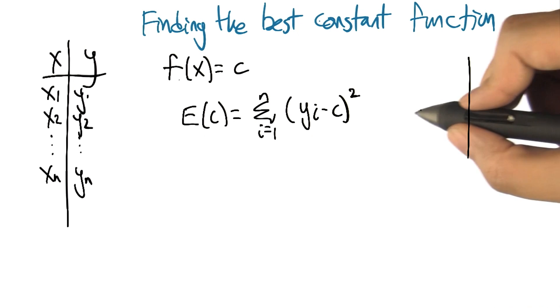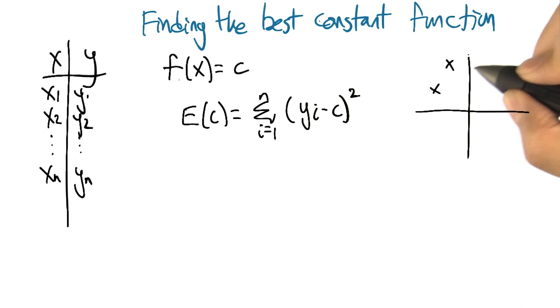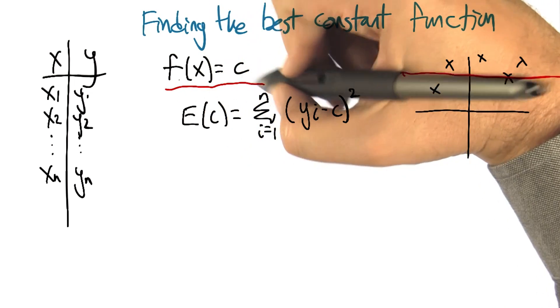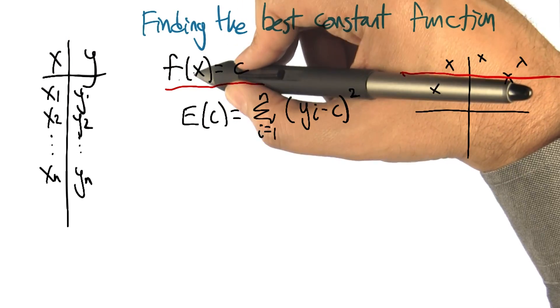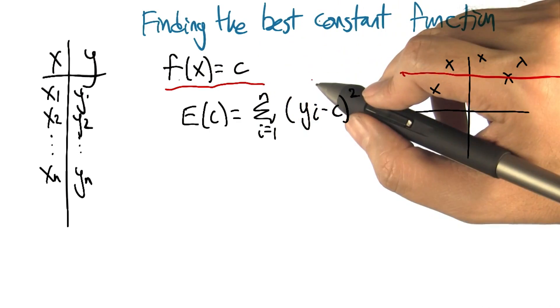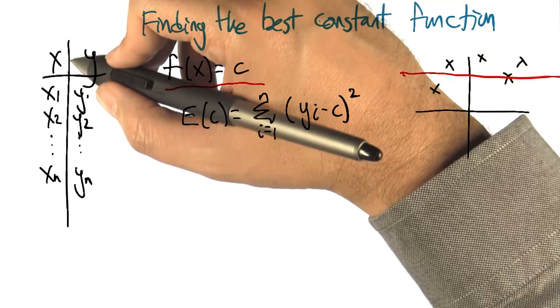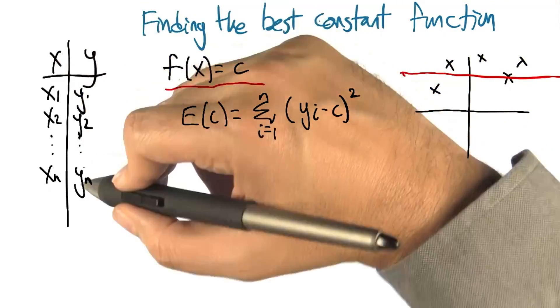So imagine that what we're trying to do is we've got a bunch of data points, and we're trying to find the best constant function. So the best function that has the form, the value of the function for any given x is always the same constant c. So if our data looks like this, we've got a bunch of x's and a bunch of y's.